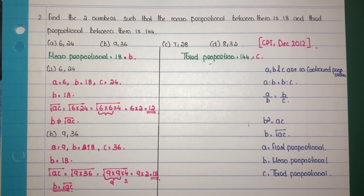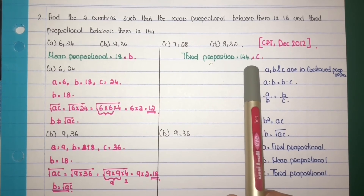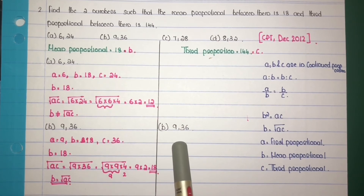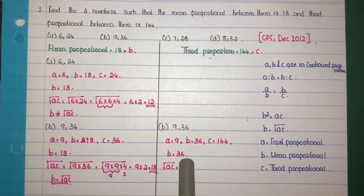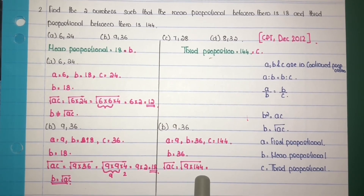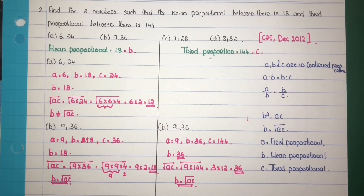Next, check the second condition for the same option. The third proportional must equal 144, that is C equals 144. Substituting A and B into the condition B equals root of AC: B equals 36, and root of AC equals root of 9 times 144. Root of 9 is 3 and root of 144 is 12, so 3 times 12 equals 36. Therefore B equals root AC — the second condition is also satisfied. The numbers 9 and 36 satisfy both conditions, so the answer is option B.